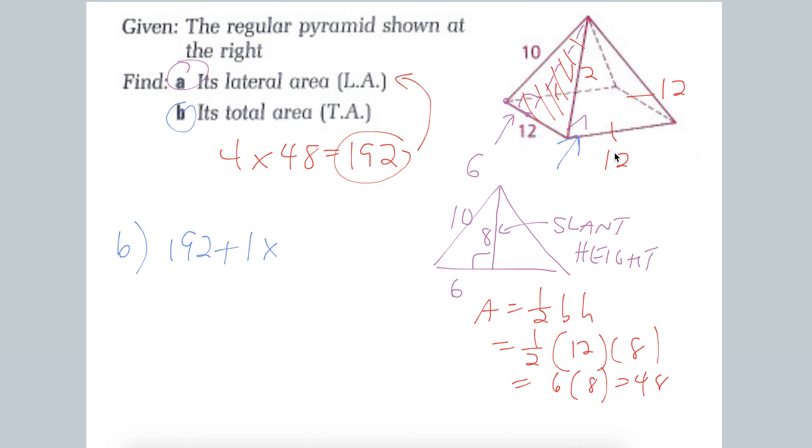So let's see what we get. So 12 squared, we get 144. And 192 plus 144, we should get 336 for the total area.